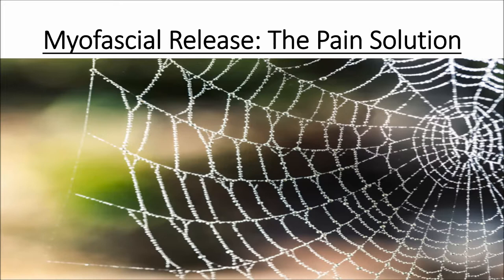Your myofascial system is the master designer of our structure. When we are in utero — just an egg that gets fertilized and starts to develop as the fetus — we start out developing three primary layers called the endoderm, the mesoderm, and the ectoderm. Different parts of us come about from these different layers of the developing fetus.